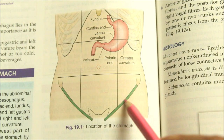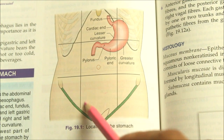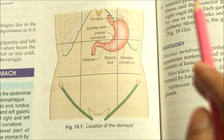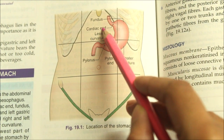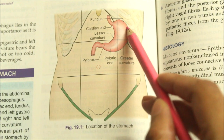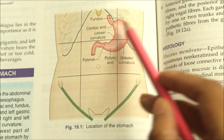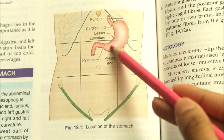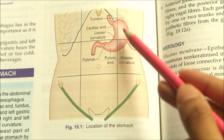The stomach lies in the epigastric region, the umbilical region, and the left hypochondriac regions. Most of it lies under the cover of the left costal margin and the ribs.